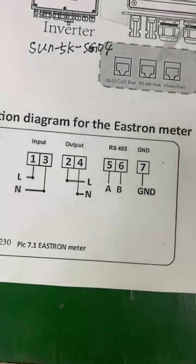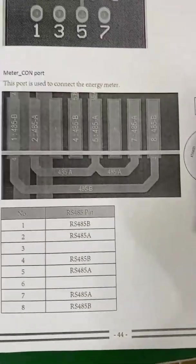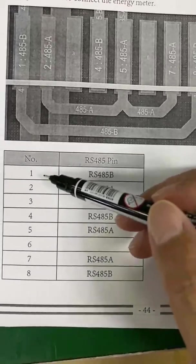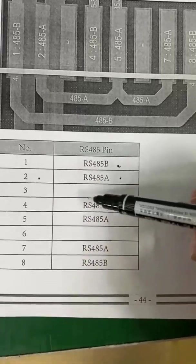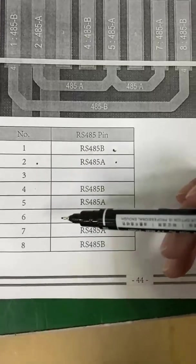And we also need this. This is the pin definition for the meter port of the hybrid inverter. We can see here. Terminal 1, terminal 2 is the B and A. Also, you can choose pin 4 and pin 5 and pin 7 and pin 8.